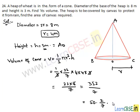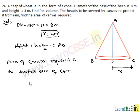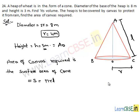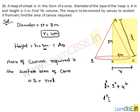Now let's find the surface area. The area of canvas required is the surface area of the cone, and the surface area of a cone is pi times r times L, where L is the slant height. The slant height is AC. To determine the slant height, we know the height of the cone is 3 meters and the base radius is 4 meters. Applying Pythagoras' theorem on triangle AOC, L squared equals the sum of the squares of the other two sides, so L squared is 25 and L is 5 meters.